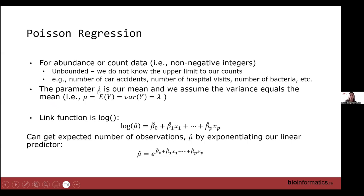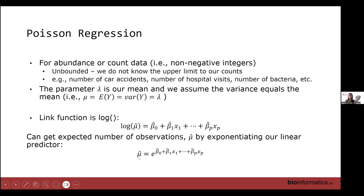The Poisson regression has the parameter lambda, which is the mean we're modeling. We have the strict assumption that the variance equals the mean: mu = E(y) = Var(y). We use the log link, so log of mu-hat equals our linear predictor. Coefficients are interpreted on the log scale — increasing x1 by one unit gives an expected increase or decrease in log abundance by beta-1, holding everything else constant. To predict the actual count, we exponentiate the linear predictor.